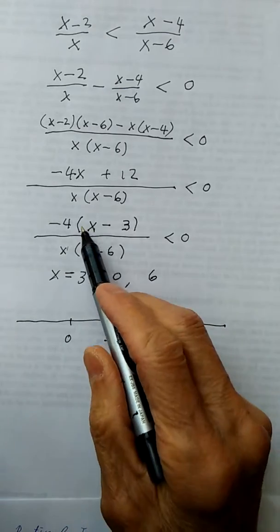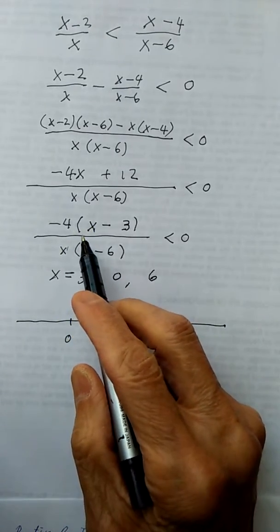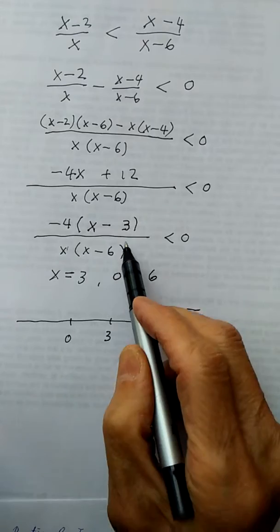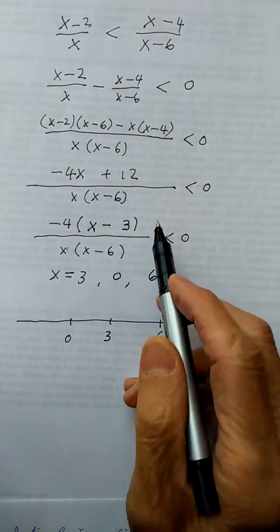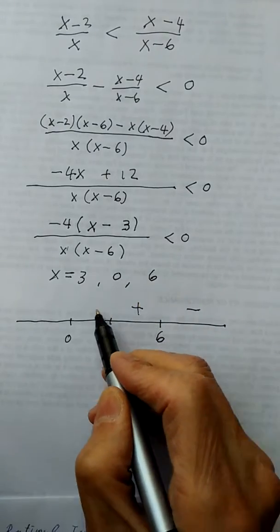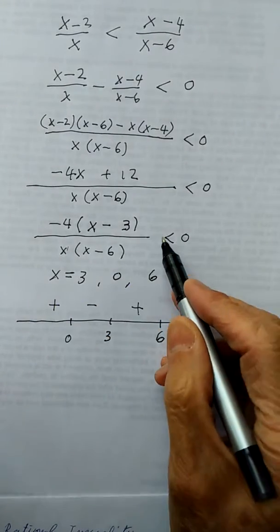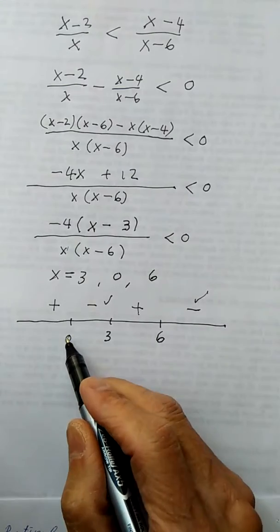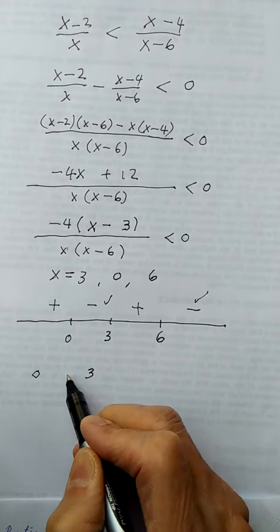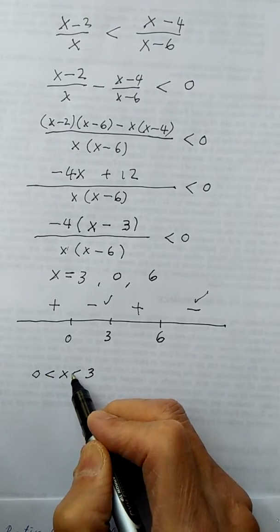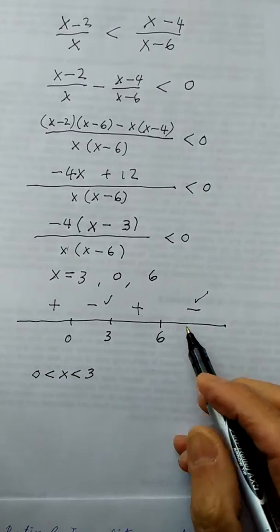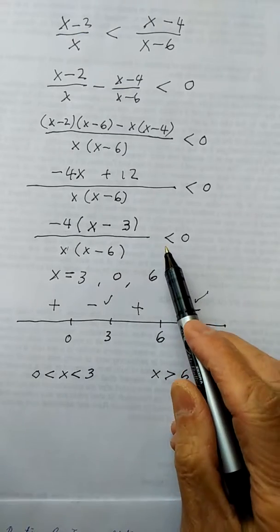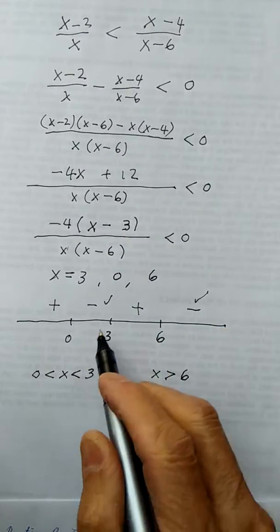The leading sign is negative because of the factored-out negative 4. There are no order-2 factors, so I alternate signs: negative, plus, minus, plus. I want negative, so the answer is between 0 and 3, and x is larger than 6. Since this question has no equal sign, I don't need to include any endpoints. So this is the answer.